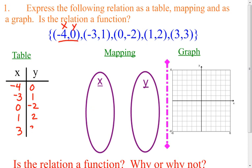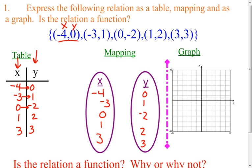Then, when I do it as a mapping, I want to first of all list all the different x's that you see. In this particular table, if I look in the x column, every single x is different. I have negative 4, negative 3, 0, 1, and 3 — all five different numbers. Then if you look in your y column, you're going to list all of the different y's — also all five different numbers: 0, 1, negative 2, 2, and 3. Then to do your mapping, you're going to pair the ones that go together: negative 4 goes with 0, 3 goes with 1, 0 goes with negative 2, and so on, drawing a line from each x to its corresponding y.